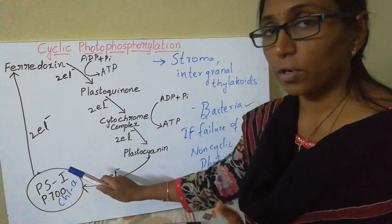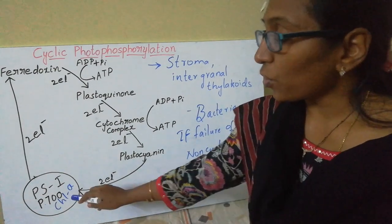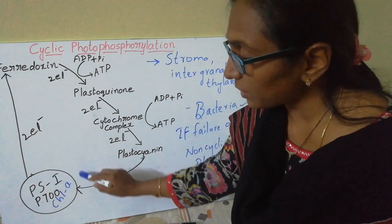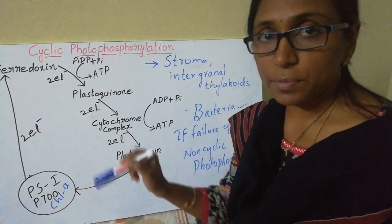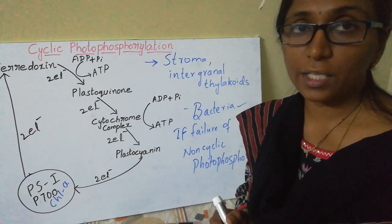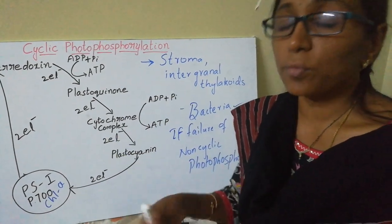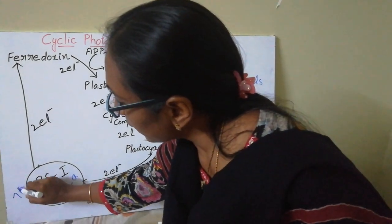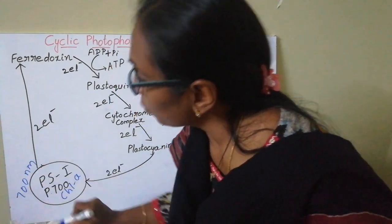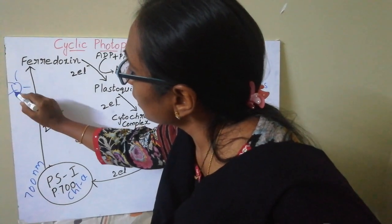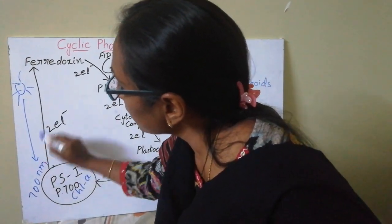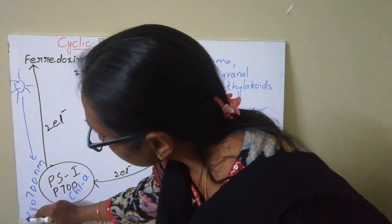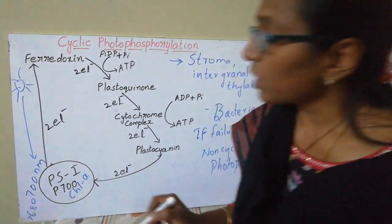Only Photosystem 1 is involved, where the chlorophyll pigment molecules present in the photosystem absorb light at a wavelength of 700 nanometers or greater than 680 nanometers. So Photosystem 1 absorbs sunlight at 700 nanometers or even greater than 680 nanometers.